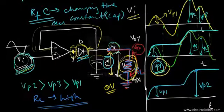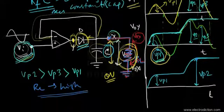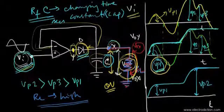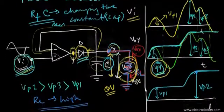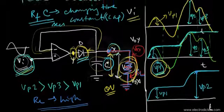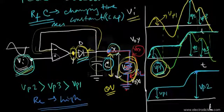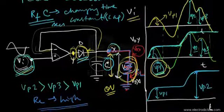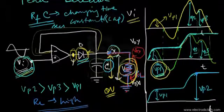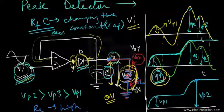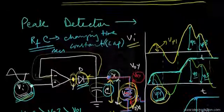So basically, this circuit records the highest peak of the input voltage. That brings us to the end of this tutorial explaining the mechanism of the peak detector circuit. Thank you for watching and don't forget to watch the next tutorial. Goodbye and thanks for watching.